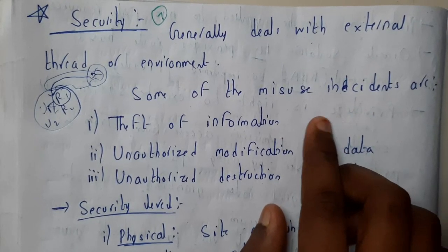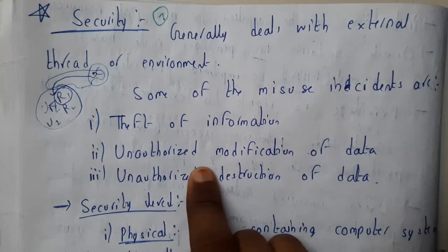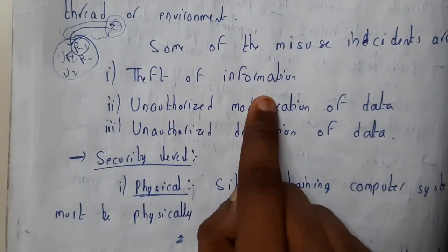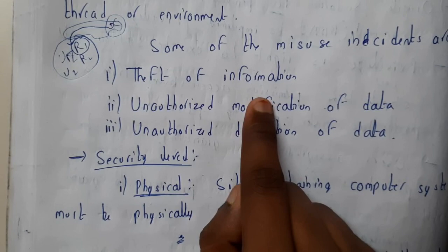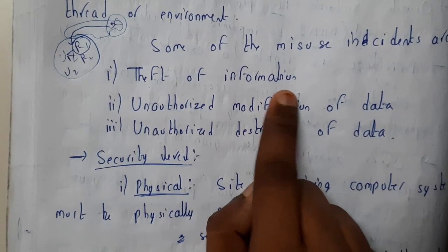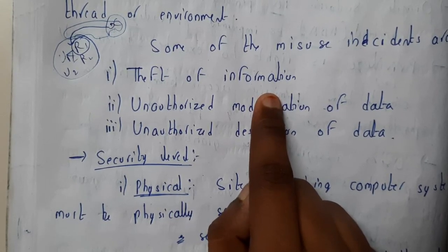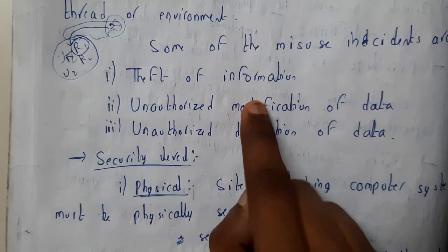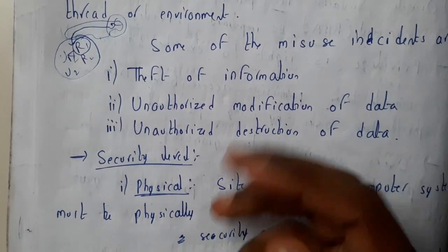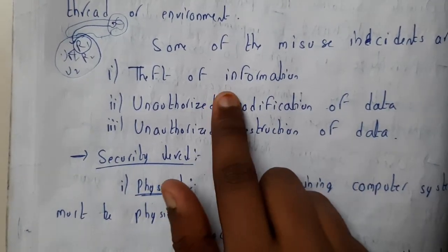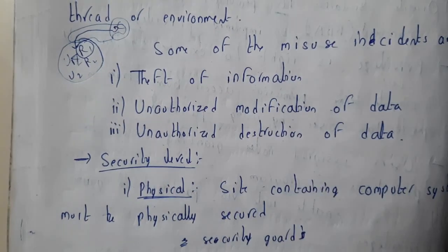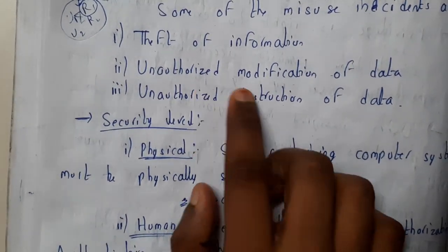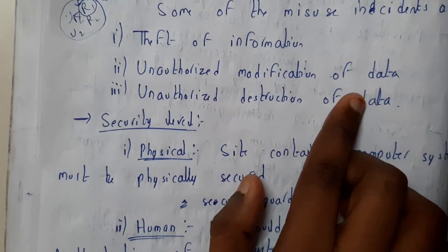There are three different places where security should be used. The first is theft of information — hackers enter your system and steal your information. Whenever you use Facebook or log into other sites, they silently capture your passwords, or use viruses or cookies to get your data.